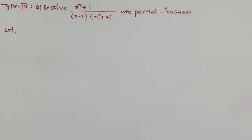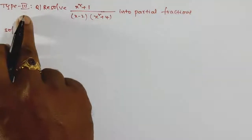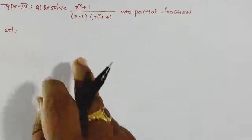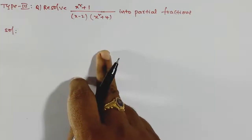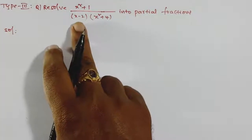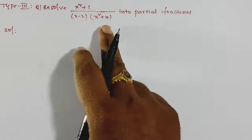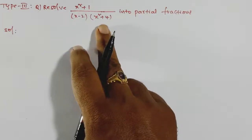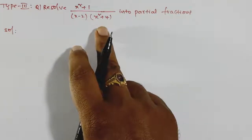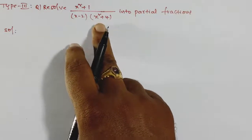Hi everyone, welcome to Arlo Srinivas's math class. Now we discuss another method of partial fractions. This is Type 3 in proper fractions: the denominator contains a non-repeated linear factor and also an irreducible quadratic expression or factor.